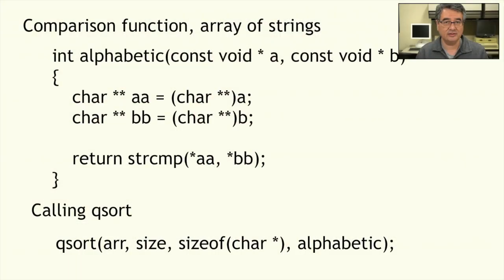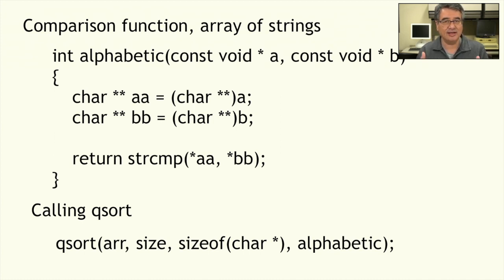When using qsort and writing the comparison function, you really have to pay attention to what types A and B are pointing to and then cast them appropriately. In the comparison function, A and B still come in as void pointers, but we know they're actually pointers to character pointers — char**. So we have to cast them to character pointer pointers. When we call strcmp, we need to dereference each one so that they turn into character pointers, which is what strcmp expects. AA and BB are char** — dereferencing them by one level turns them into character pointers.